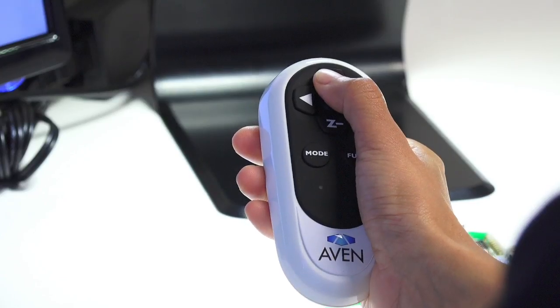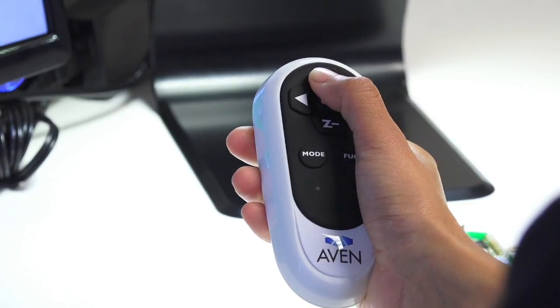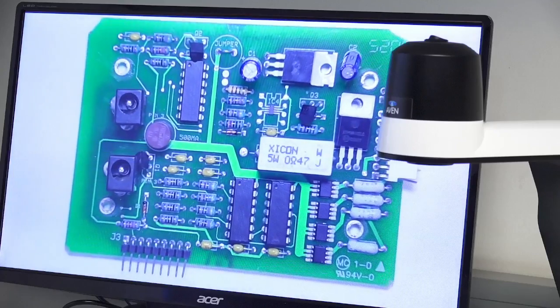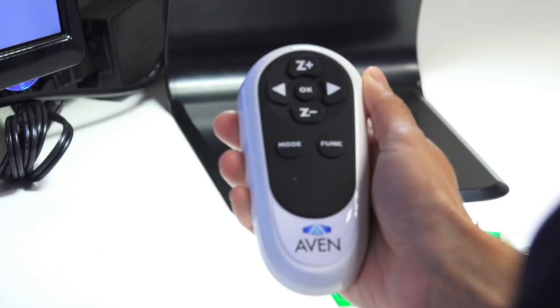A wireless remote is included for operating the SharpView functions such as zoom, autofocus, and more, all with a touch of a button.